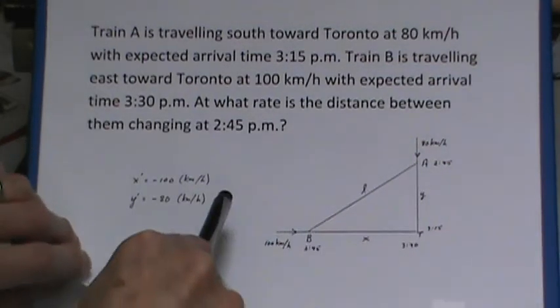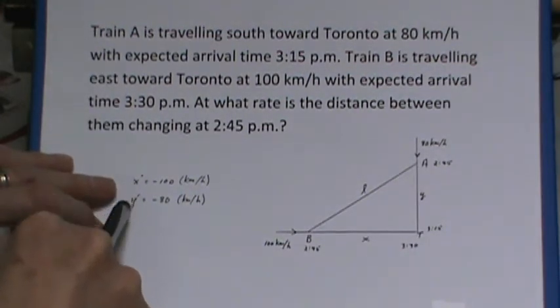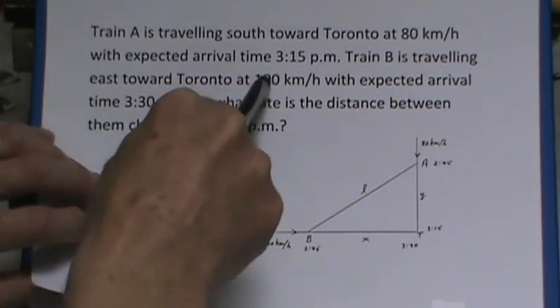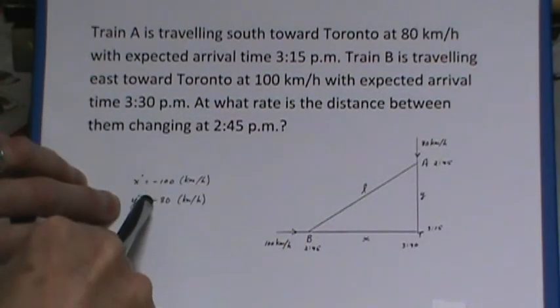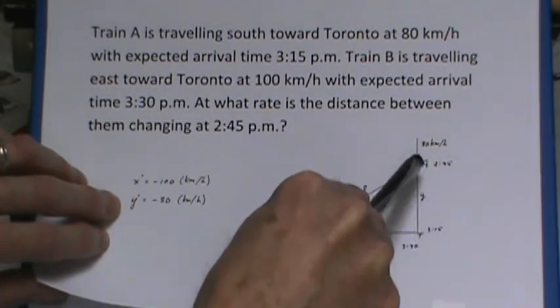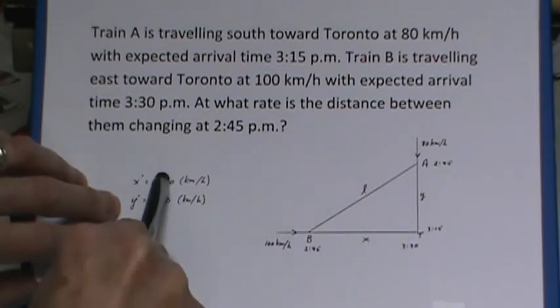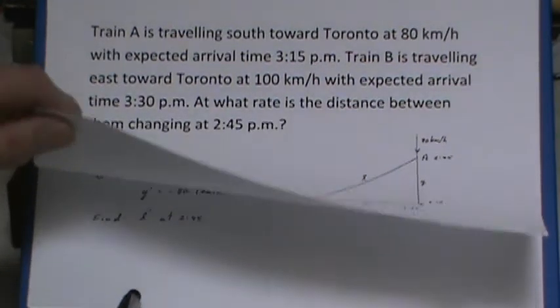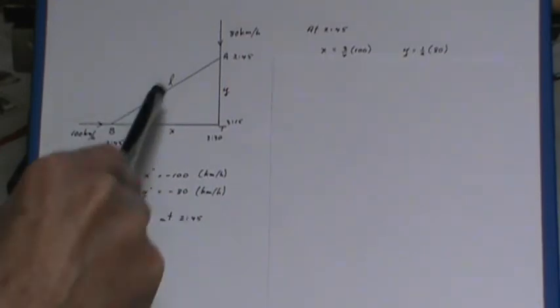So I've marked everything that I could on here and I also mentioned the dx/dt which is the 100 and the dy/dt which is 80. The reason I have the negative signs here is because y is getting shorter and x is getting shorter. So they're decreasing in length. That's why I have the negative signs on them. And mainly what I have to find is dl/dt at 2:45.